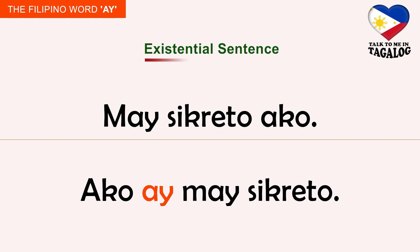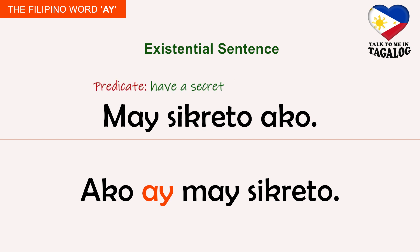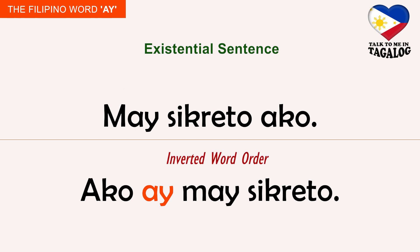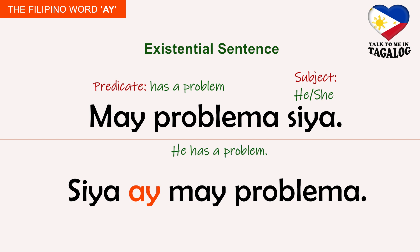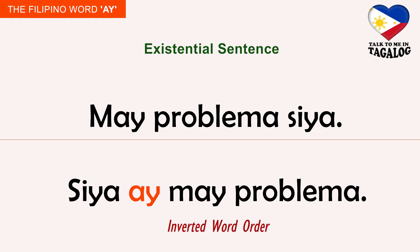Our next sentence type is called an existential sentence because it states the existence of something or the state of having something. It is marked by existential particles 'may' and 'mayroon'. This existential phrase occupies the predicate position. 'May sikreto ako' means I have a secret. Inverted order: 'Ako ay may sikreto'. 'May problema siya' means he has a problem. Inverted order: 'Siya ay may problema'.